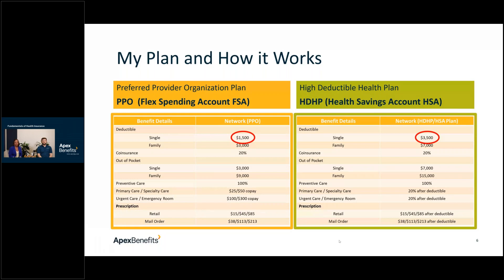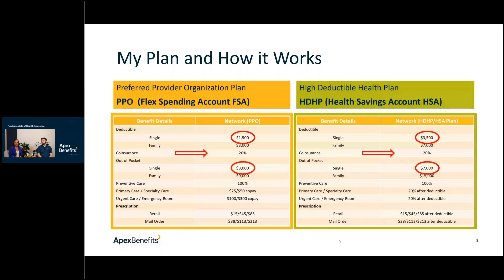The out-of-pocket maximum — how much a member is responsible for in one plan year — is $3,000 on the PPO and $7,000 on the HDHP. The coinsurance on the PPO: once you've reached the $1,500 deductible, you have 20% coinsurance up to that max out-of-pocket, so the member pays 20% and the plan sponsor pays 80%. The same structure applies to the HDHP: $3,500 deductible, then 20% coinsurance up to the $7,000 out-of-pocket max.